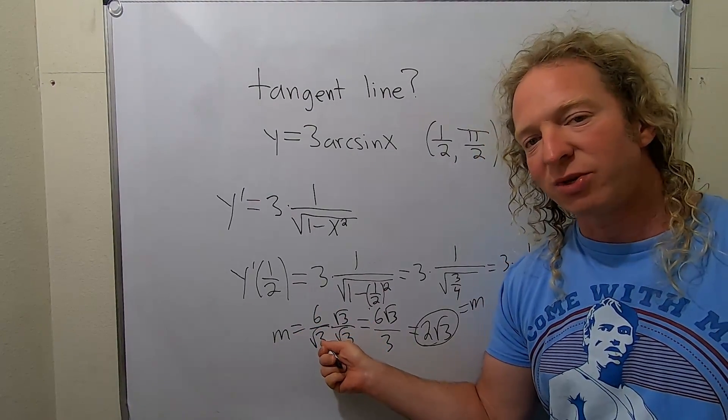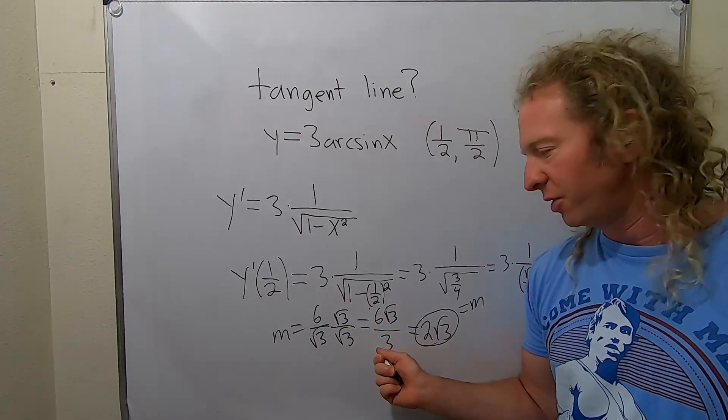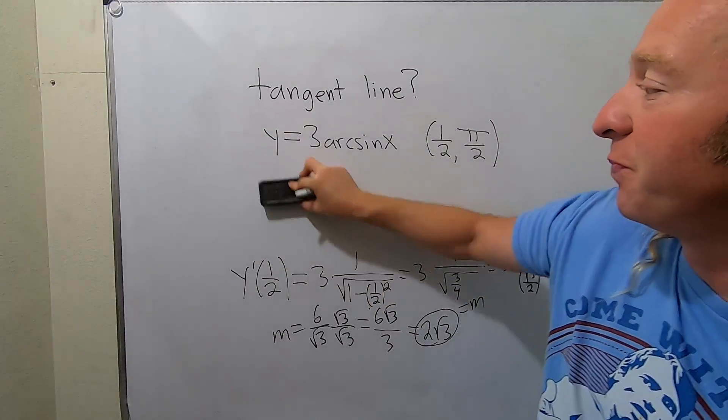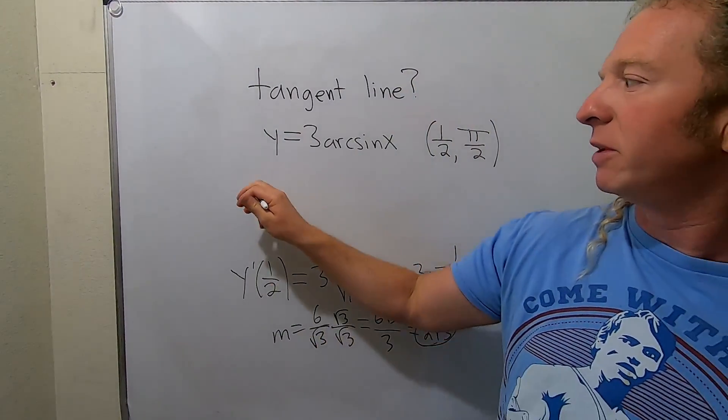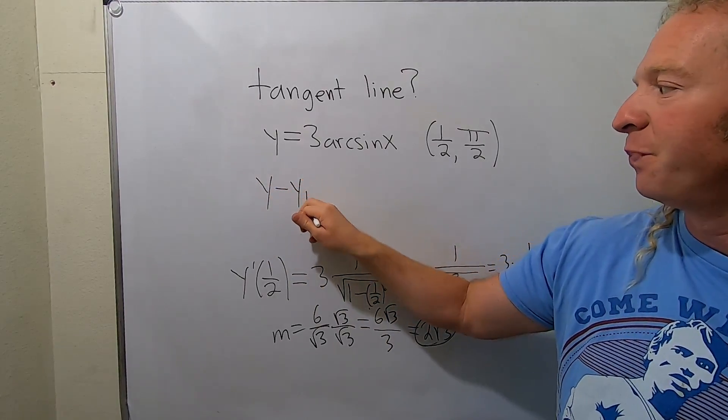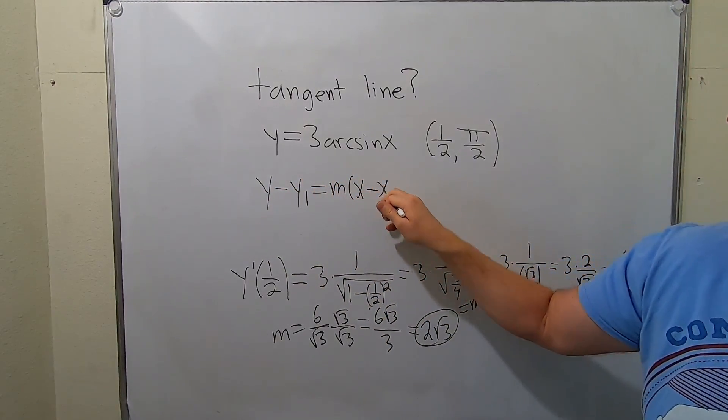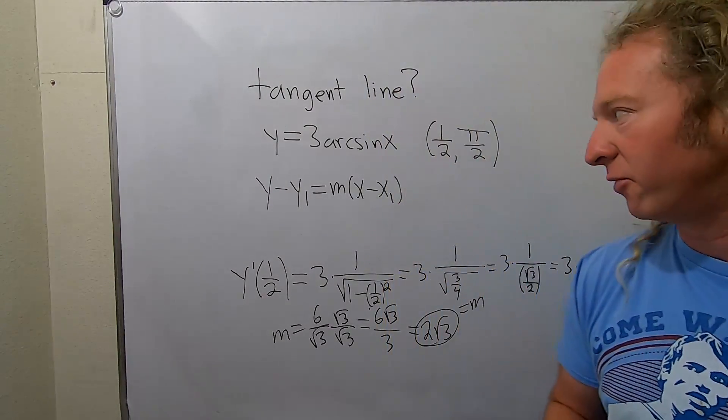So to rationalize, what you do is you just multiply by 1 in a clever way. Square root of 3 times square root of 3 is 3. You get this. 6 over 3 is 2. Boom. All right, let's finish this thing. So to finish, we use a formula. It's called the point-slope formula. The formula is y minus y1 equals m parentheses x minus x1. Then you just plug everything in and try to be careful.